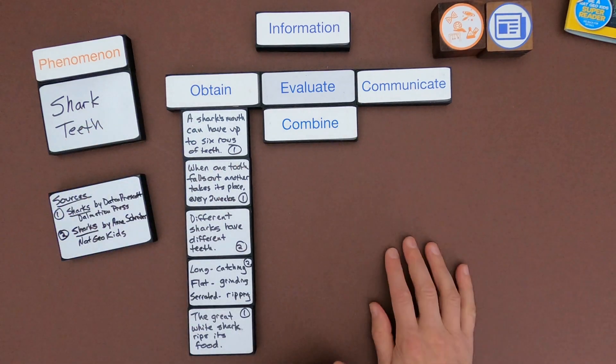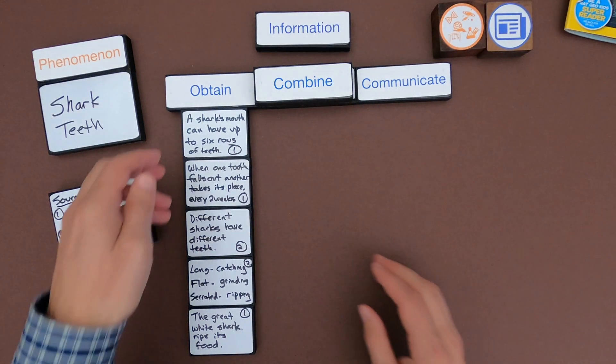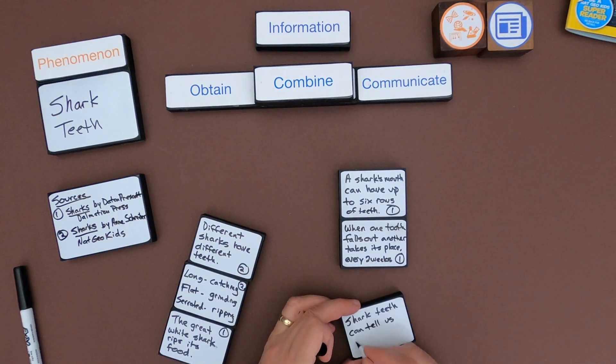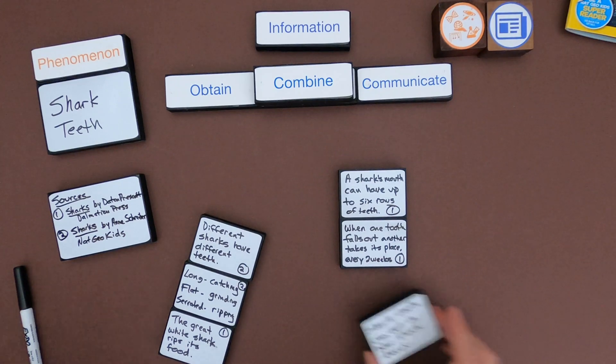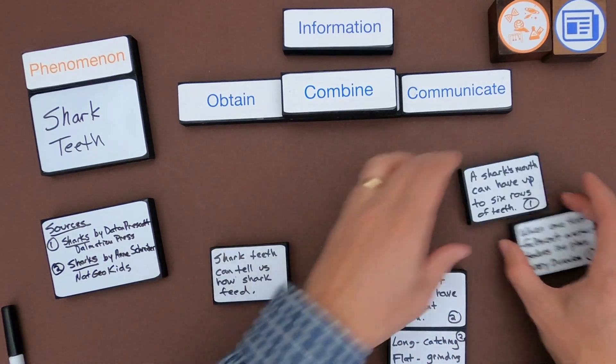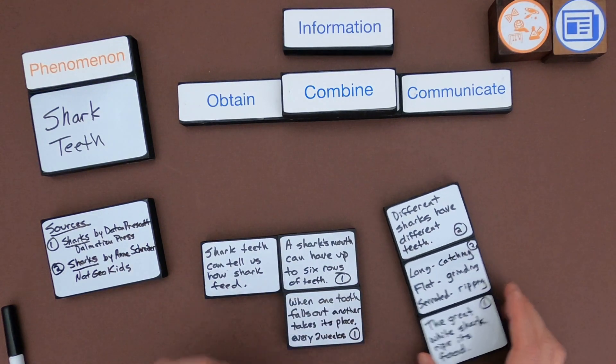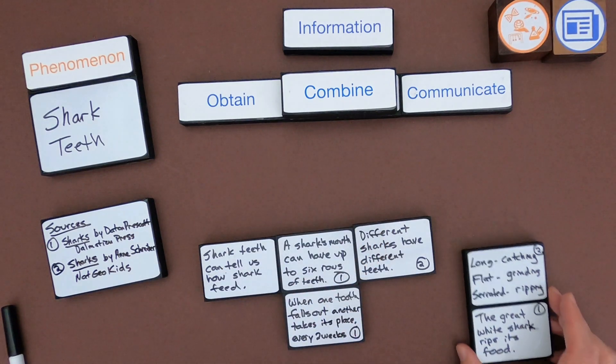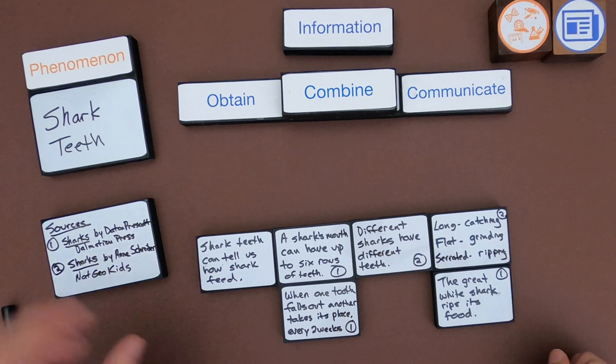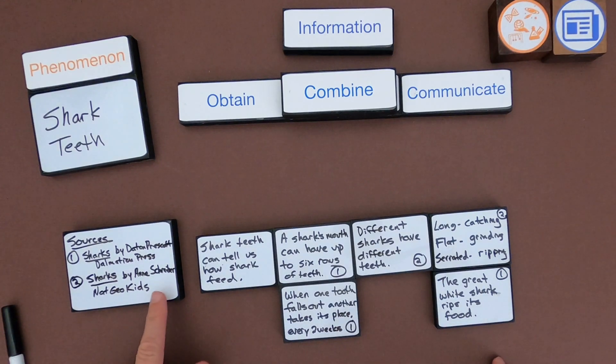And now I know based on just a little bit of reasoning evaluating the evidence that they must rip their food. So now I've gone through and I've gathered or obtained the information. What I want to do is I want to evaluate that information. And so how do I organize this in a way or how do I combine this information? I want to tell some kind of a story. And so I don't know. What do I want to start with? I think I would start with... Okay. So I'm gathering. I'm adding a little bit of information to give it context. I said shark teeth can tell us how shark feed. I could say a shark's mouth can have up to six rows of teeth. And when one tooth falls out, another takes its place. Different sharks have different teeth. Long teeth are for catching, flat teeth are for grinding, and serrated are for ripping. That tells us that the great white shark rips its food. And so also I want to make sure that I'm giving sources or giving credit to where I'm pulling those quotes or those sources from.